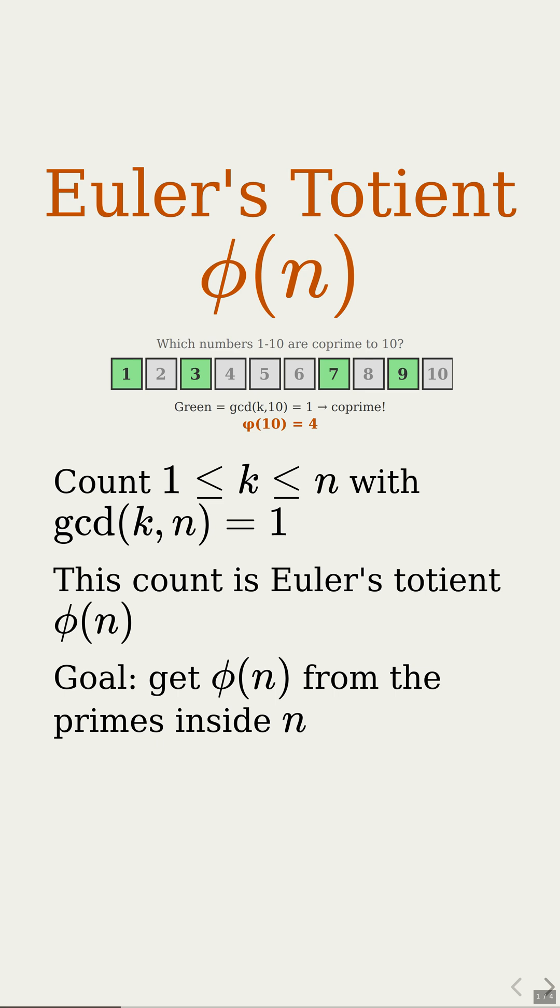Our mission is to express phi of n using only the primes that appear in the factorization of n. Wait, just from the primes of n, you can tell how many numbers are co-prime to it?